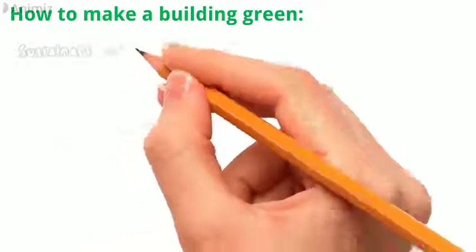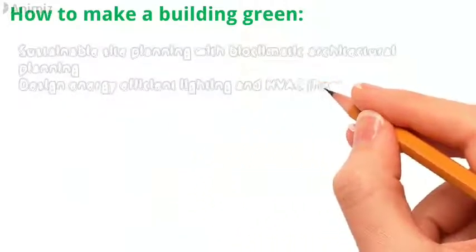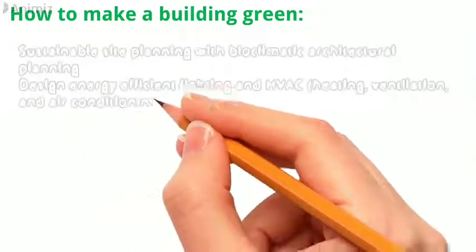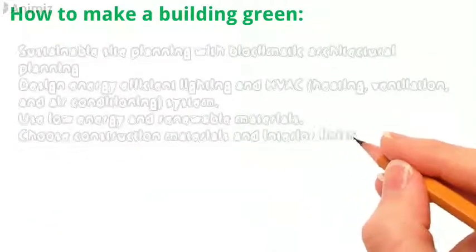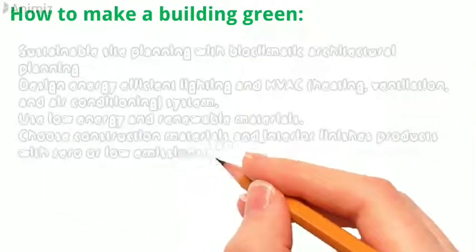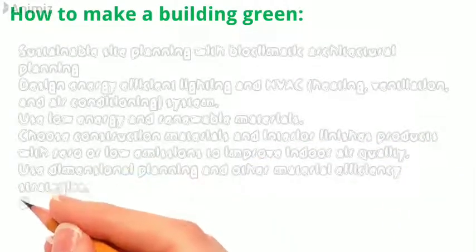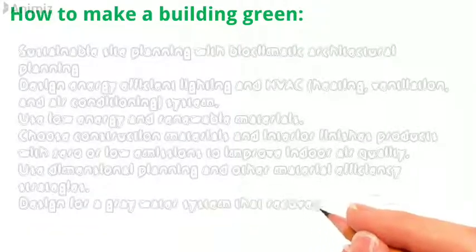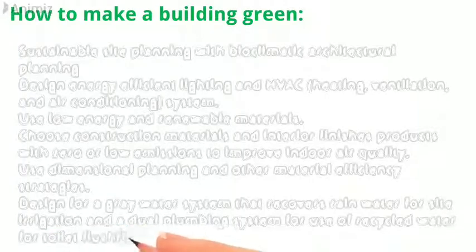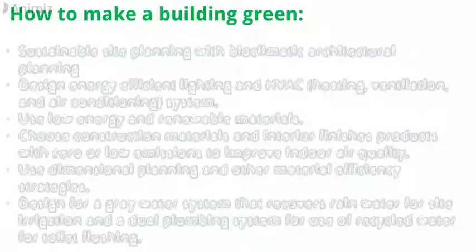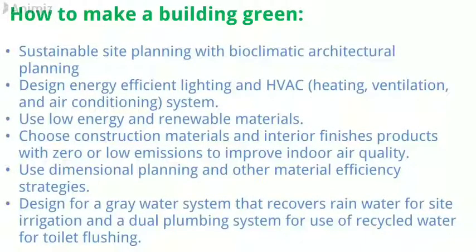Sustainable site planning with bioclimatic architectural planning design. Energy-efficient lighting and HVAC, heating, ventilation, and air conditioning system. Use low-energy and renewable materials. Choose construction materials and interior finishes products with zero or low emissions to improve indoor air quality. Use dimensional planning and other material efficiency strategies. Design for a gray water system that recovers rainwater for site irrigation and a dual plumbing system for use of recycled water for toilet flushing.